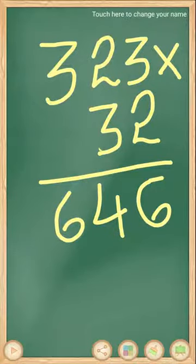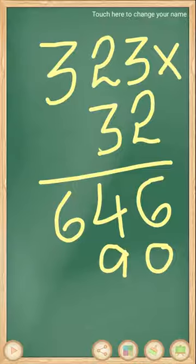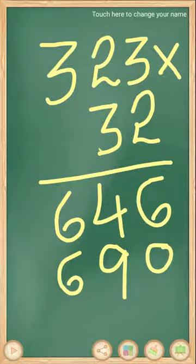Next we multiply the tens place number. Put one 0, then 3 × 3, 3 × 3 equals 9, 3 × 2 equals 6, then 3 × 3 equals 9.